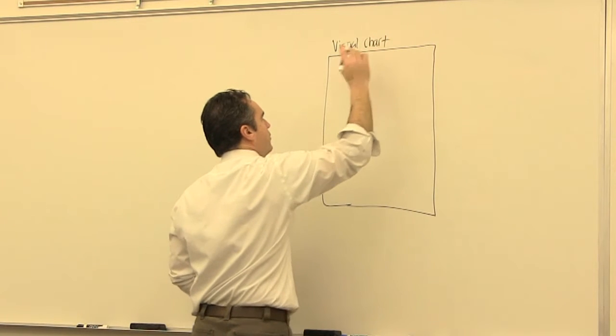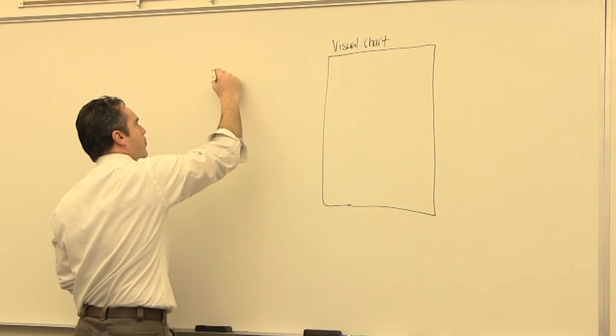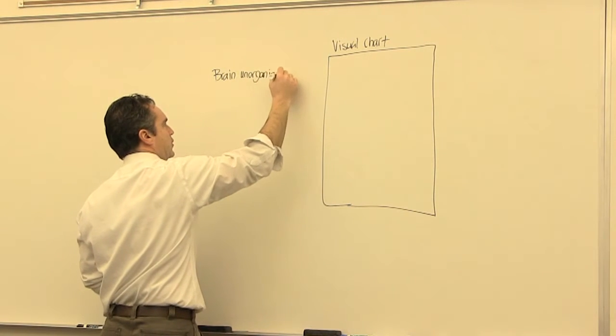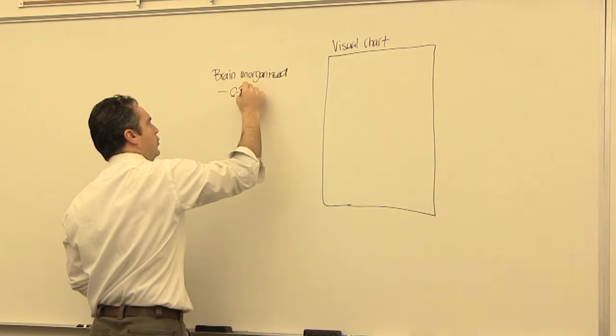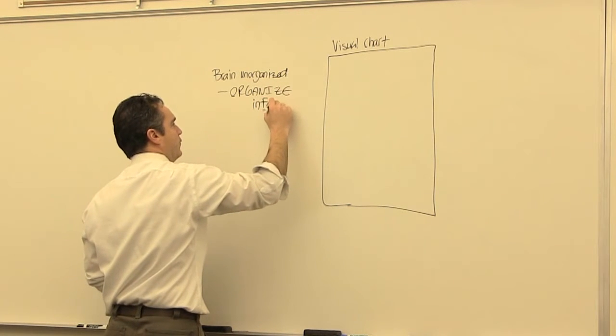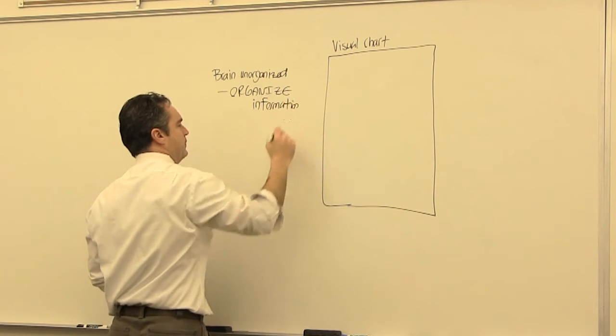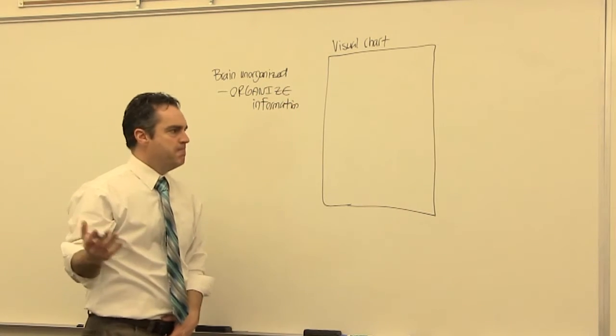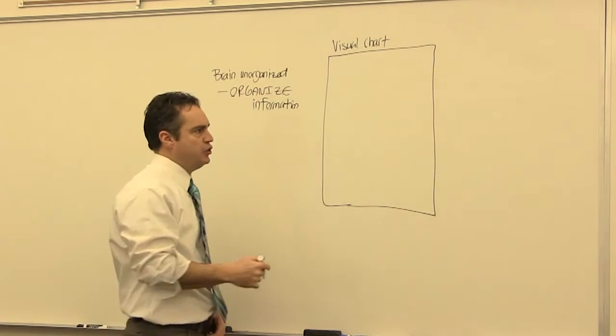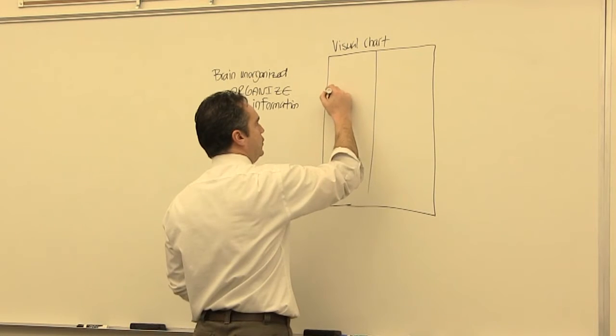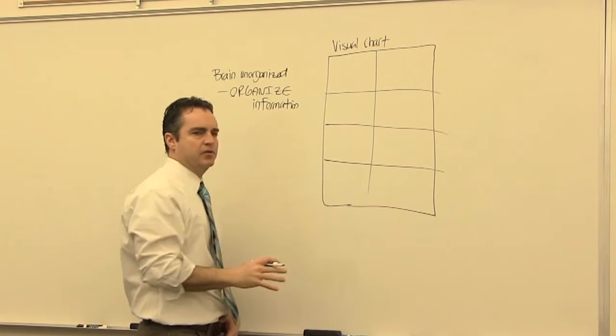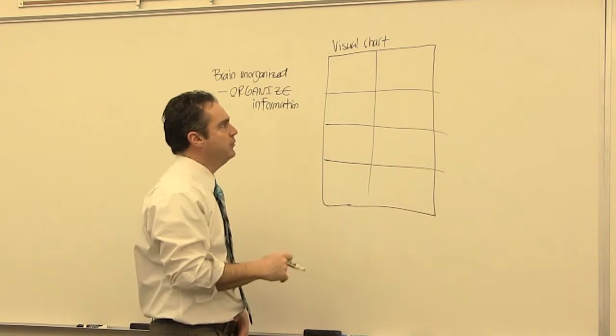So one of the principles is that our brain is unorganized. And we are responsible to organize that information. So if you had six sections or eight sections in a chapter that you covered, you can take this and you can break it up into eight boxes for each section of homework that you did.